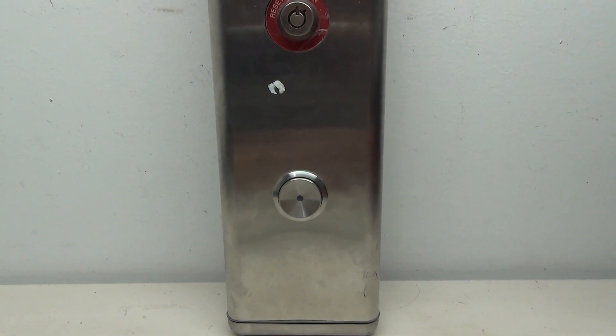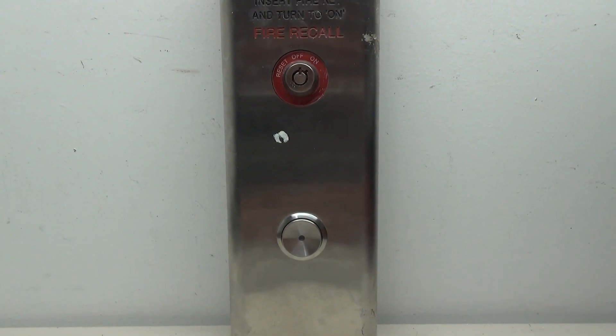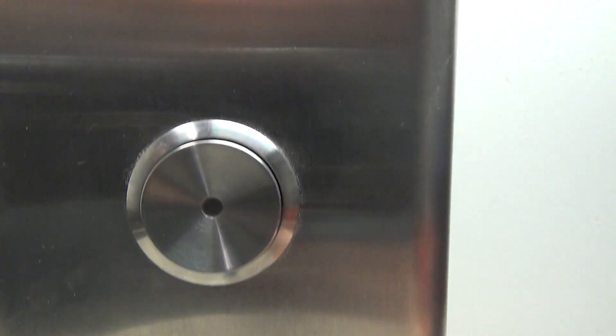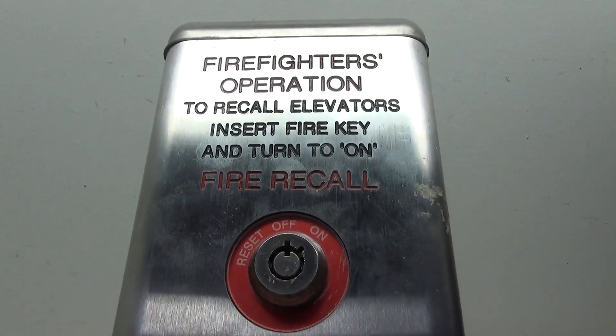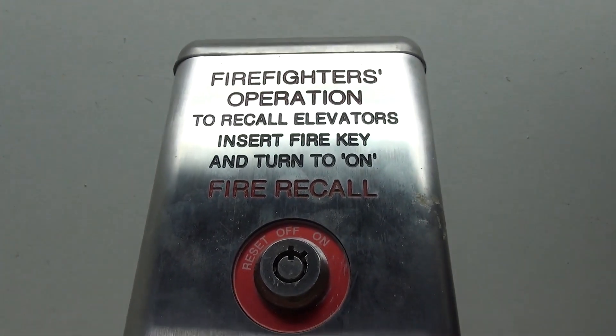This here is a rather simple MAD replacement call station. This was found on the bottom floor. You have your button and a fire service key switch. Today I'm going to show you how to wire this button and make the key switch light up the button as well.